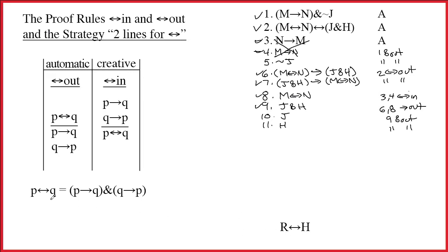It's virtually identical for two lines for ampersand. In fact, if you remember that a double arrow is equivalent to an ampersand statement, it really just is two lines for ampersand. What are the two lines we want? Well, obviously, we need to prove R arrow H.